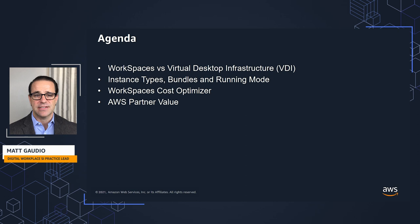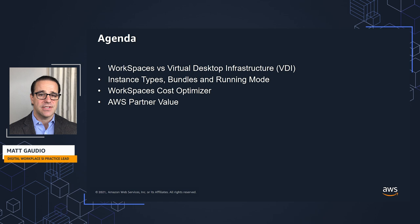The cost variables include instance types — what scale of compute power do you need, what operating system, and so on. We'll talk about our bundles and the running mode, and all these things will be clear by the time we're done. Then we'll talk about a tool we offer called WorkSpaces Cost Optimizer, a free service that lets you automate some of the process around reducing costs.